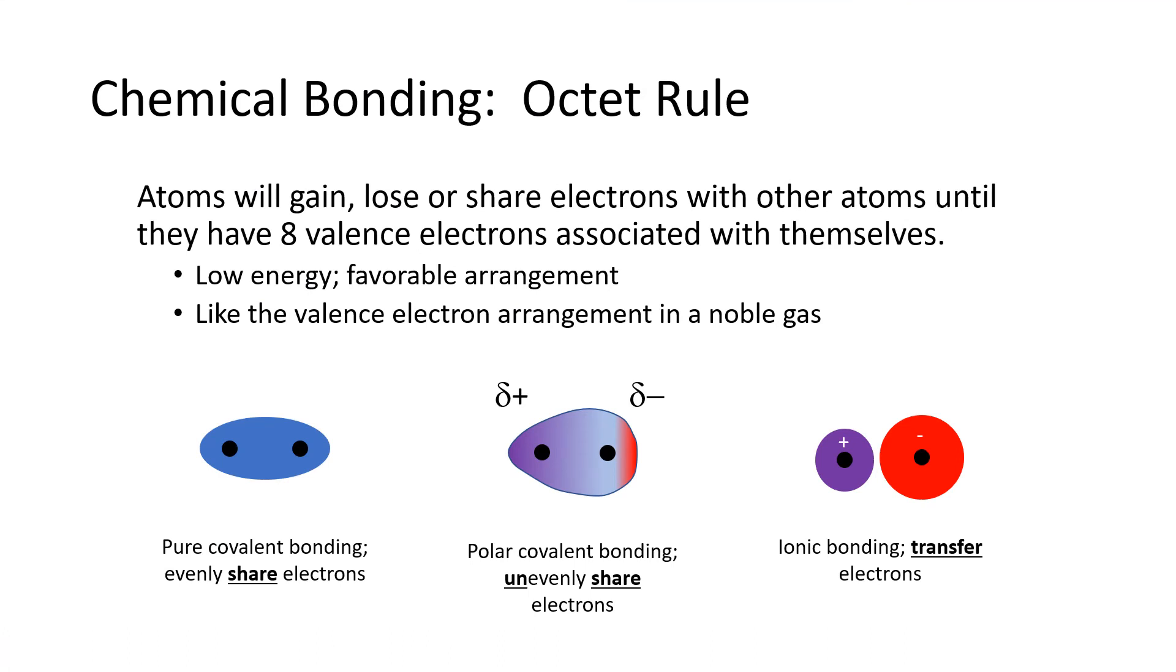Chemical bonding in general is governed by the octet rule. If we are talking about main group elements, they will completely fill their S and P subshell, which gives us a total of eight electrons.